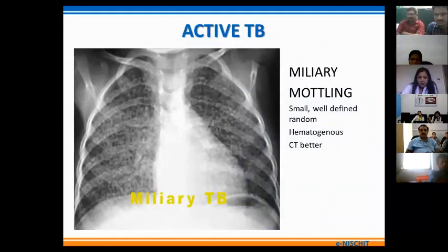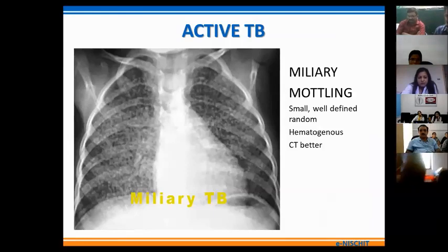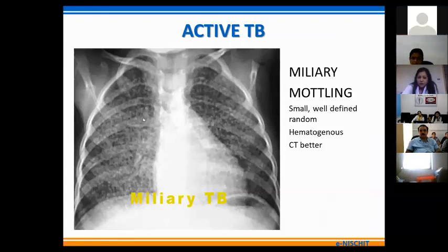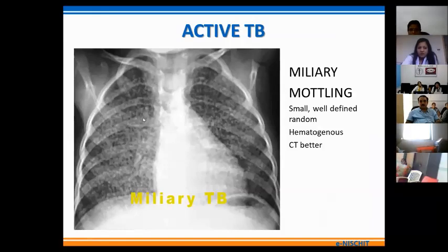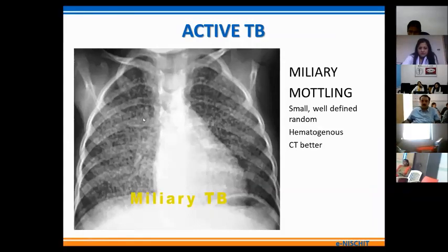Miliary nodulation consists of multiple tiny discrete or fluffy nodular densities showing a random distribution. This is in contrast with other forms of TB which show an upper lobe predominance. The miliary nodulation is generally uniform throughout the lung field; in fact a basal predominance may be noted because of the gravity-dependent blood flow to the lower zones. Miliary nodulation is caused by hematogenous spread of infection.